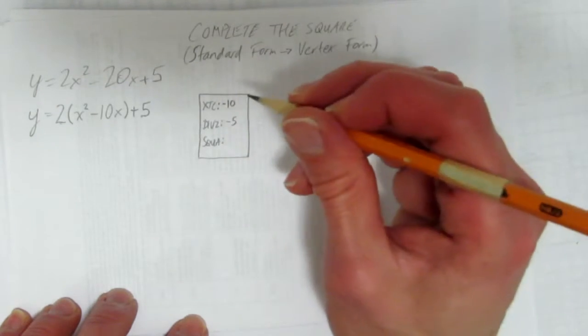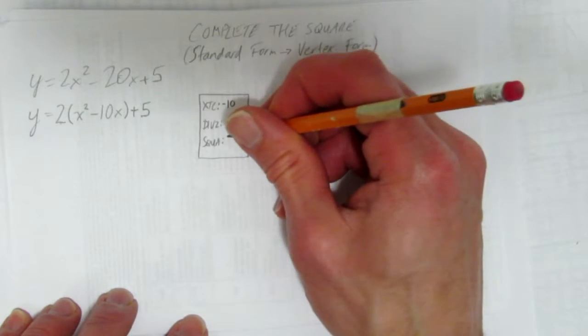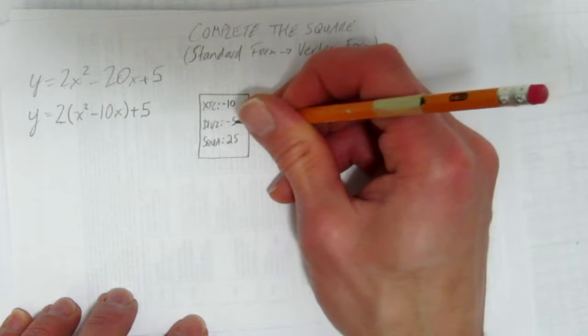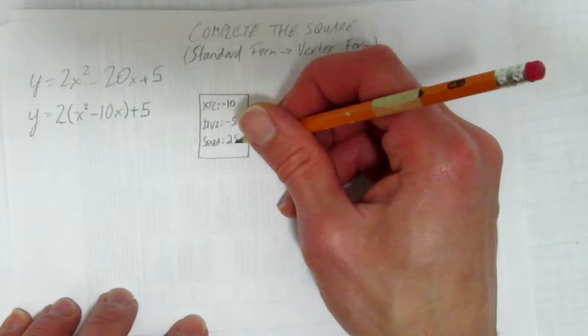Finally, I square it. Not square root it, square it. Lots of people make that mistake. What's negative 5 squared? Positive 25. 5 times 5 is 25, but so is negative 5 times negative 5. The negatives cancel. You get 25.